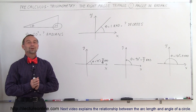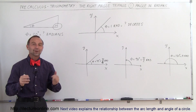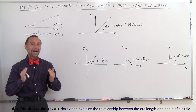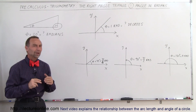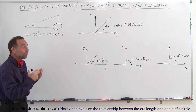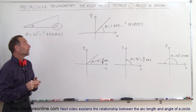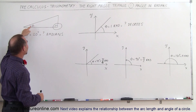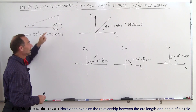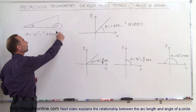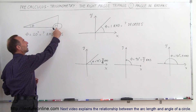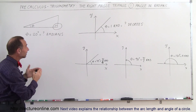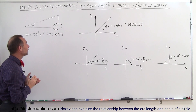Welcome to ElectronLine. We're going to do a new series on trigonometry, namely the right-angled triangle. A right-angled triangle is a triangle which has three sides and three angles, and one of the three angles has to be 90 degrees — indicated by the small square symbol shown here.